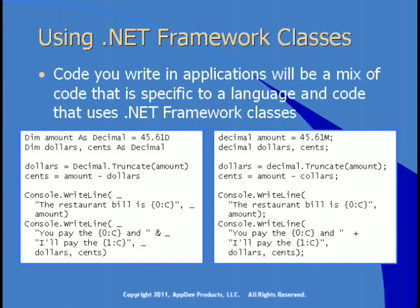You can see that the code has a lot in common. The use of decimal.Truncate is the same, and the use of console.WriteLine is the same — those are both defined in the .NET Framework. The parts specific to Visual Basic are the Dim As syntax, the use of D to denote decimal, the fact that Decimal is capitalized, the use of underscores as line continuation characters, and the use of the ampersand to concatenate strings. On the C# side, decimal is lowercase, M is used to denote decimal, plus is used to concatenate strings, there's no line continuation character, and you use a semicolon to denote the end of the line.